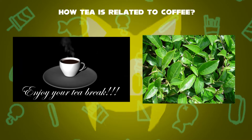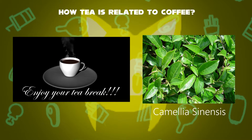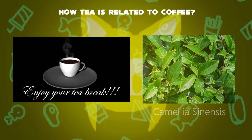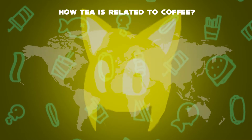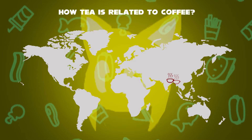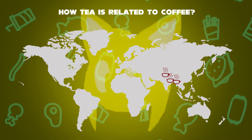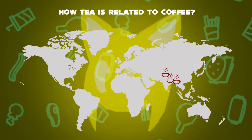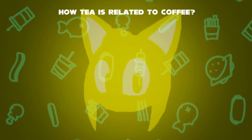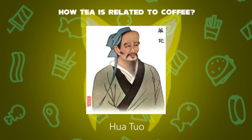Tea is an aromatic beverage commonly prepared by pouring hot or boiling water over cured or fresh leaves of Camellia sinensis, an evergreen shrub native to East Asia. The tea plant originated in the region encompassing today's Northeast India, North Myanmar, Southwest China, and Tibet, where it was used as a medicinal drink by various ethnic groups.